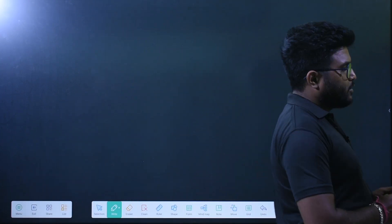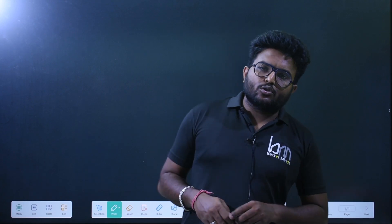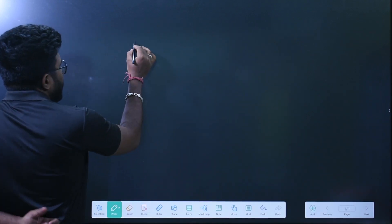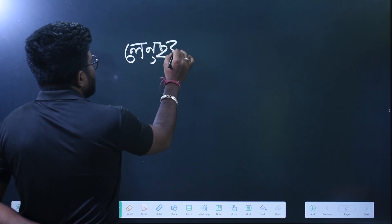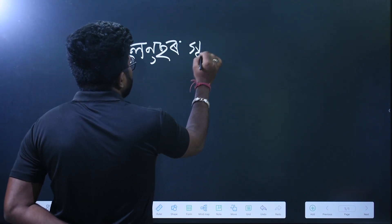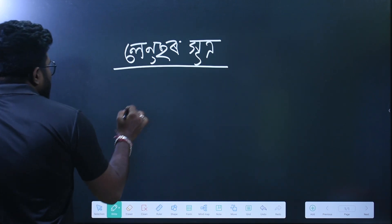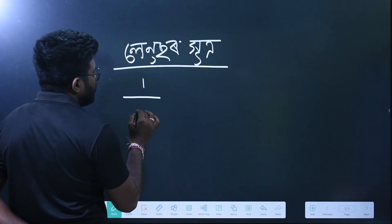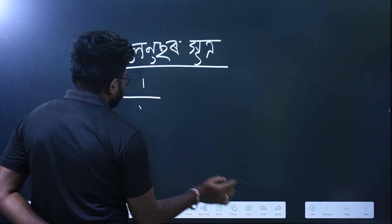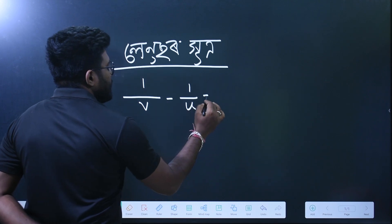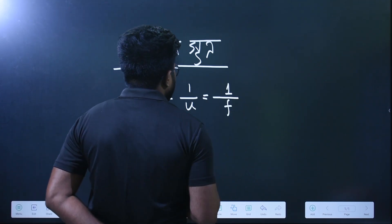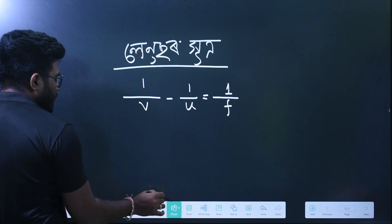Hello everyone. I am going to start the next part. I am going to start the lens formula. The formula is: 1 by V minus 1 by U is equal to 1 by F. So this is the lens formula.